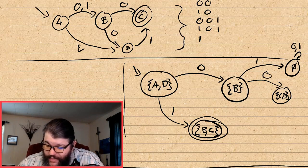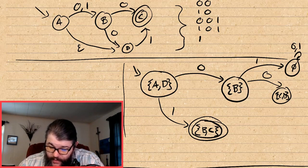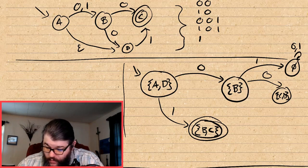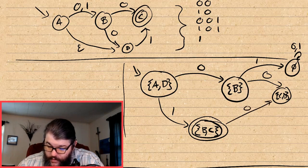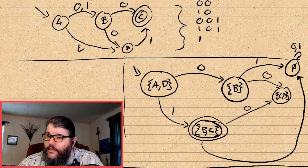Now let's look at the state {B, C}. On a 0, B goes to C and D, while C falls off — so {B, C} on a 0 goes to {C, D}. On a 1, both B and C fall off the machine, so on a 1 we jump to the null state.